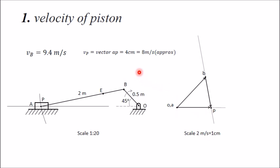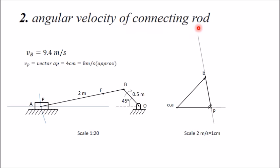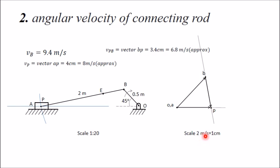Measuring the length ap in the velocity diagram gives 4 centimeters. Applying the scale (2 m/s = 1 cm), the absolute velocity of the piston is 8 meters per second, directed toward the right. To determine the angular velocity of the connecting rod, measure length bp — the velocity of P with respect to B — which gives 3.4 centimeters, corresponding to 6.8 meters per second.